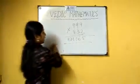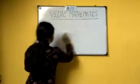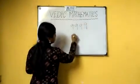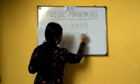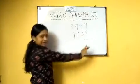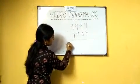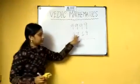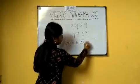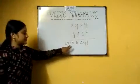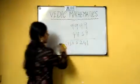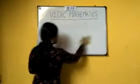Another example using this method: 9999 into 4759. Subtract 1 from 4759, giving 4758. Take the complement of 4759, which is 5241. So the answer becomes 47585241.